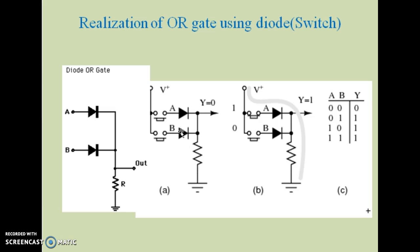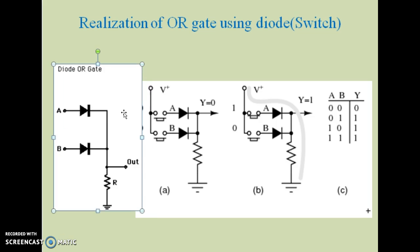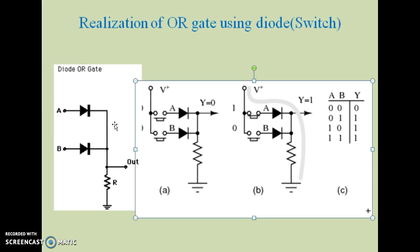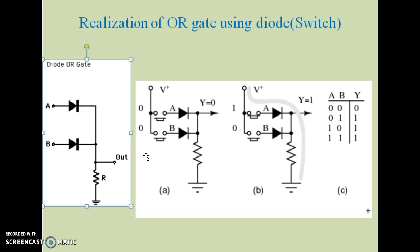A equal to zero and B equal to zero. When both diodes have anode connected to zero, then output is zero as no current flows and both diodes work as open circuit. This is zero zero output zero condition.